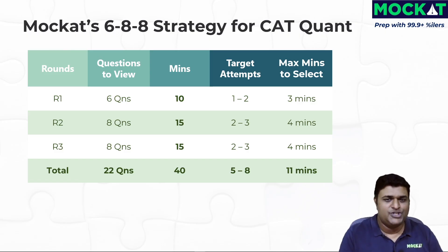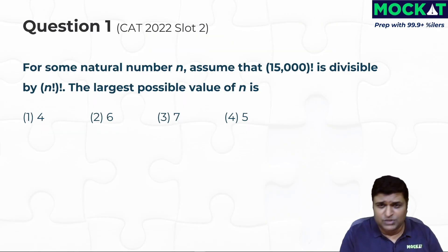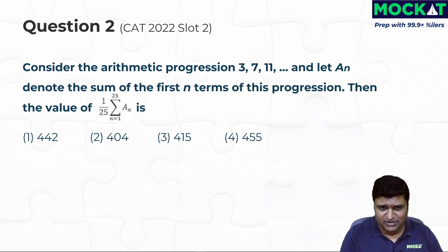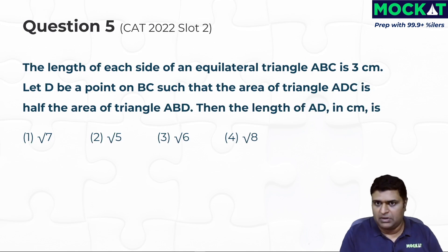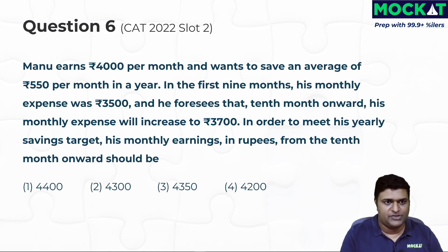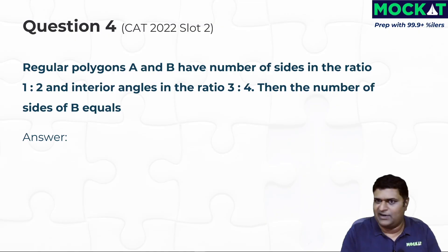Being quick here means choosing the correct questions — not rushing past them. I see a lot of students selecting six questions in under half a minute. Let's look at the first six questions from CAT 2022 Slot 2. Question 1: 15,000 factorial — very difficult, skip. Question 2: arithmetic progression, sigma notation — looks tough. Question 3: percentage, simple interest — maybe. Question 4: polygons geometry — unsure. Question 5: big numbers, ratios — possibly. The issue is when your mind races through them too fast. You have to slow down.